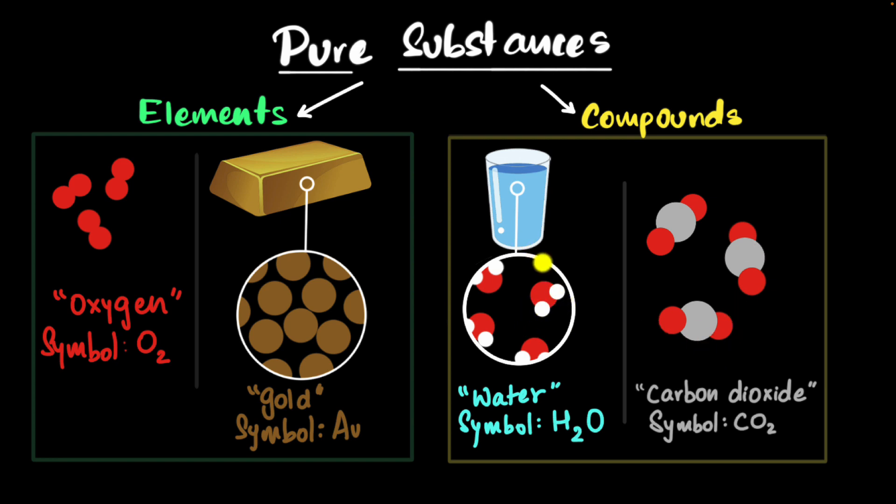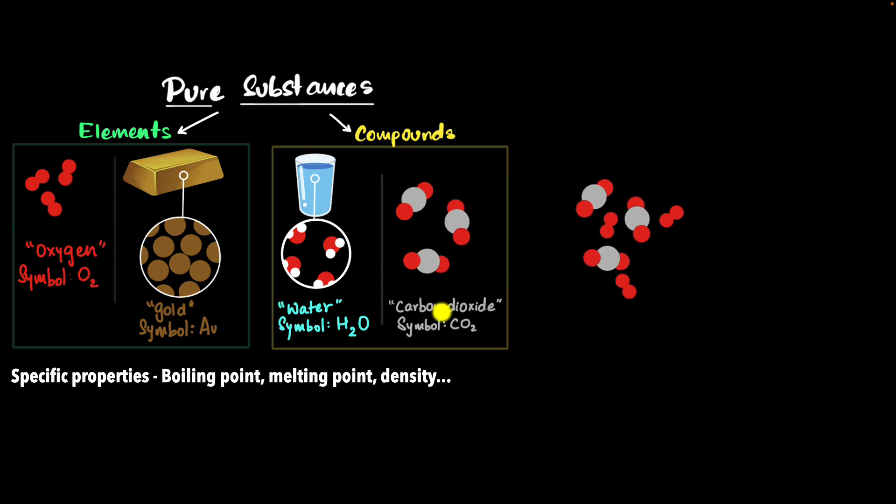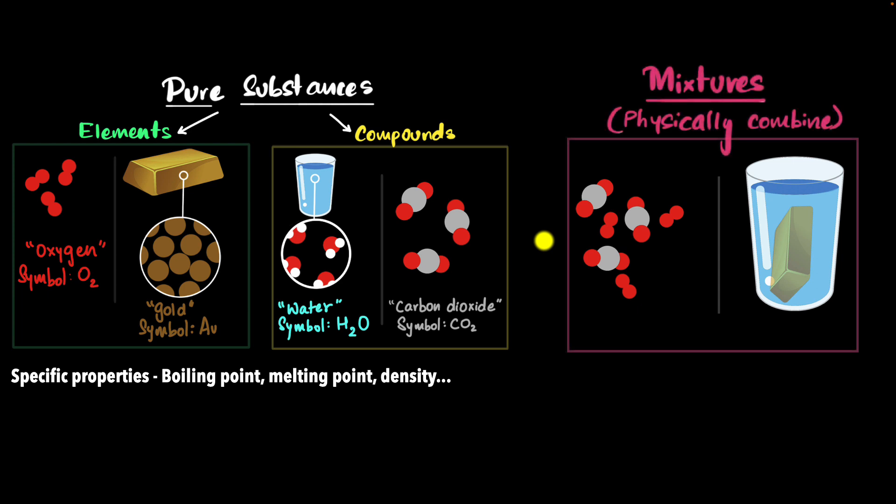So elements and compounds are pure substances, and they have very specific properties like boiling points, melting points, densities, and so on. Now, what do you think happens when we physically combine two pure substances? Like, for example, oxygen and carbon dioxide. Or let's say we put gold in water. We create mixtures.